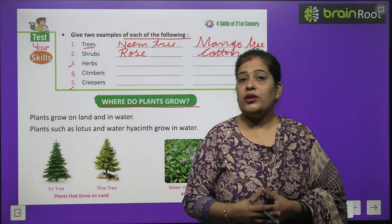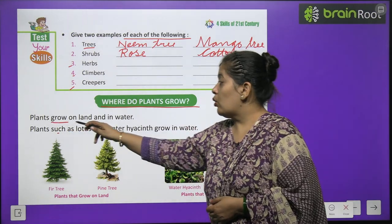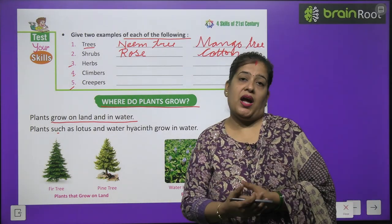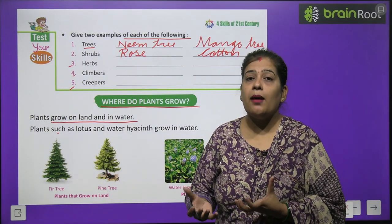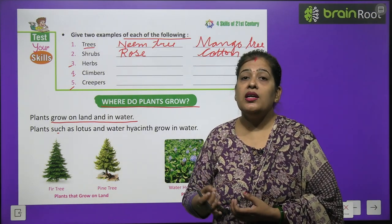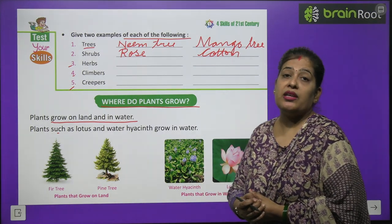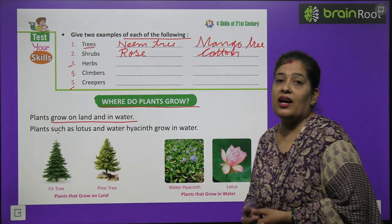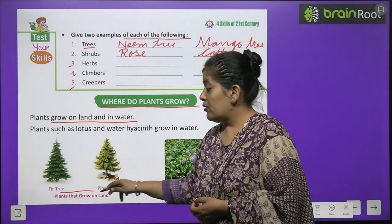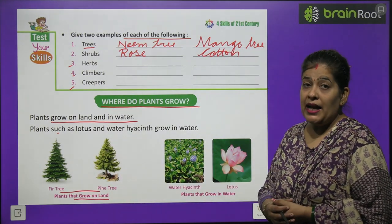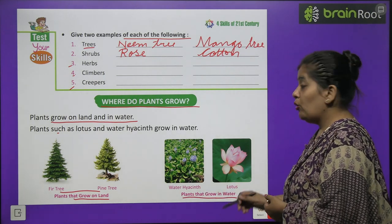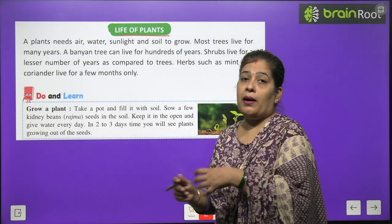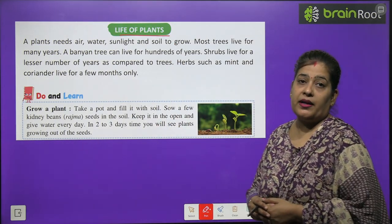Now we will learn: where do plants grow? Plants grow on land and in water. Lotus and water hyacinth grow in water. Pine tree grows on land. So two plants grow on land and two grow in water.